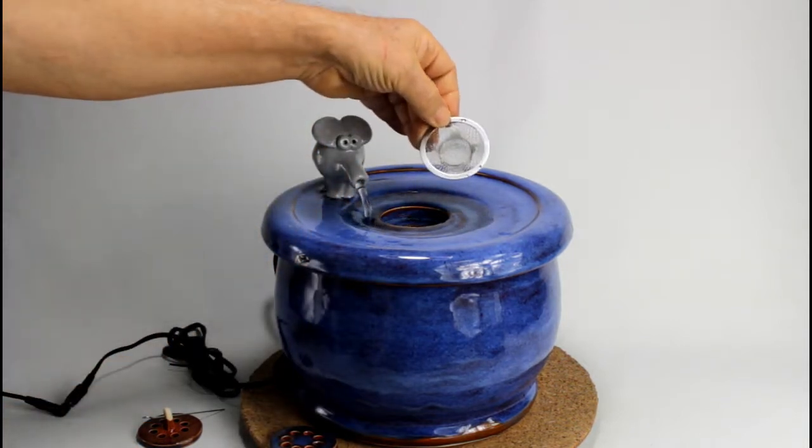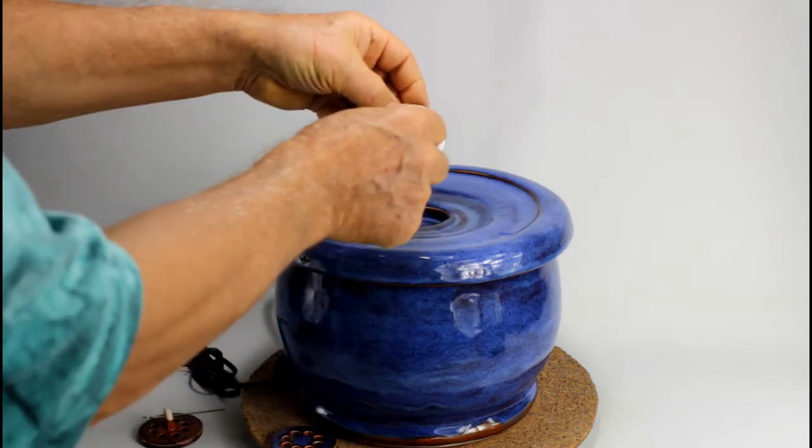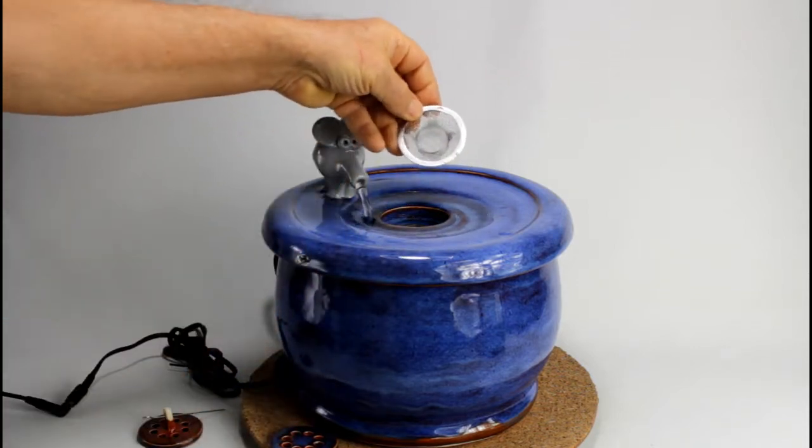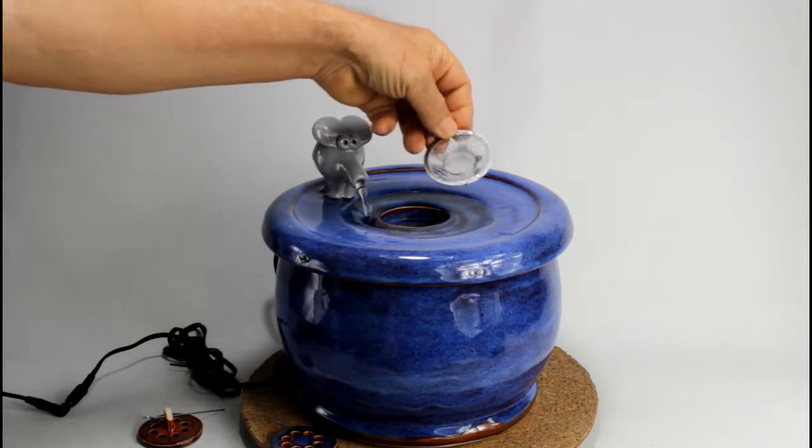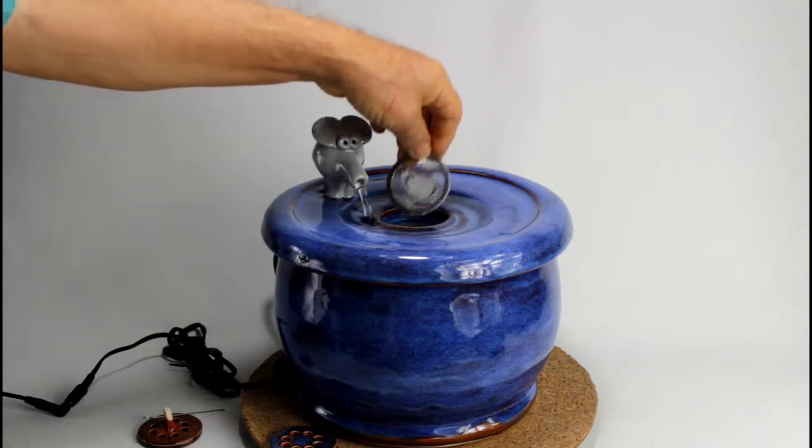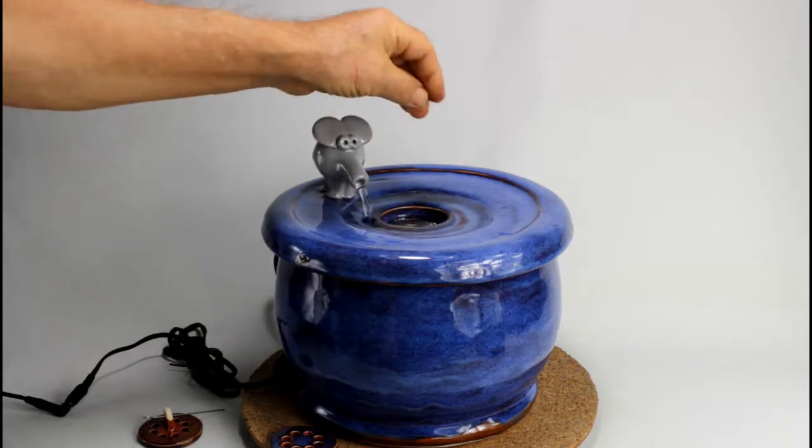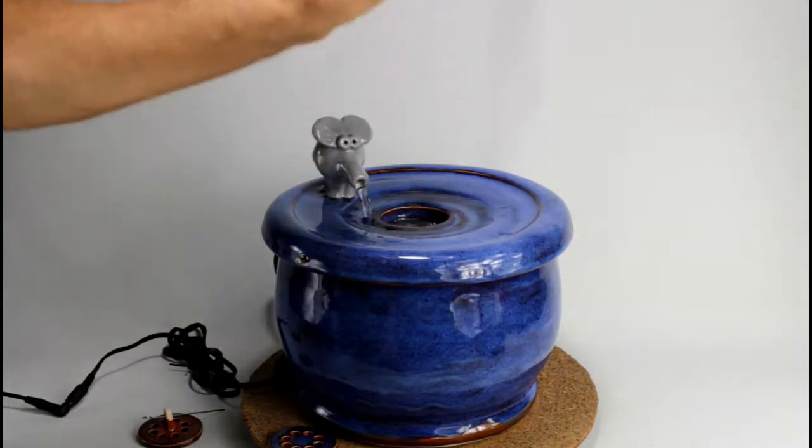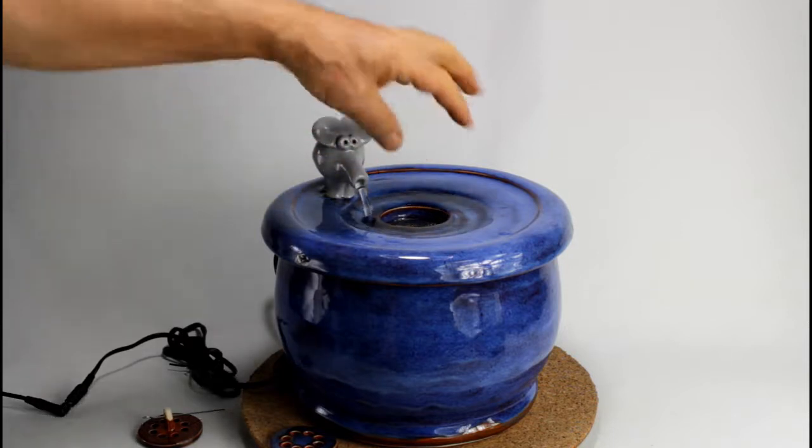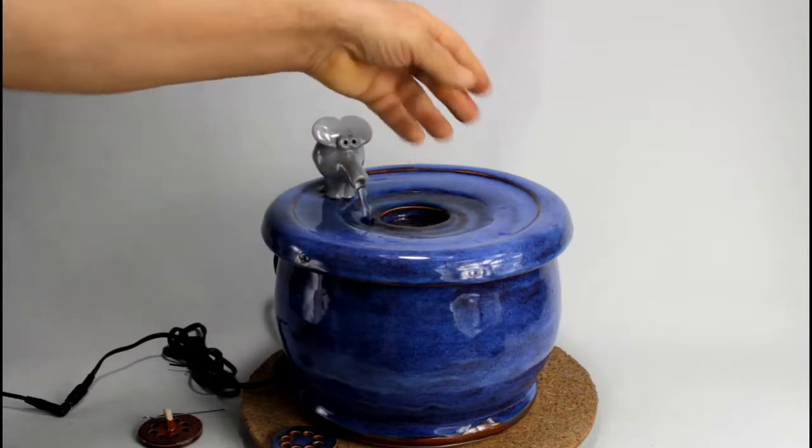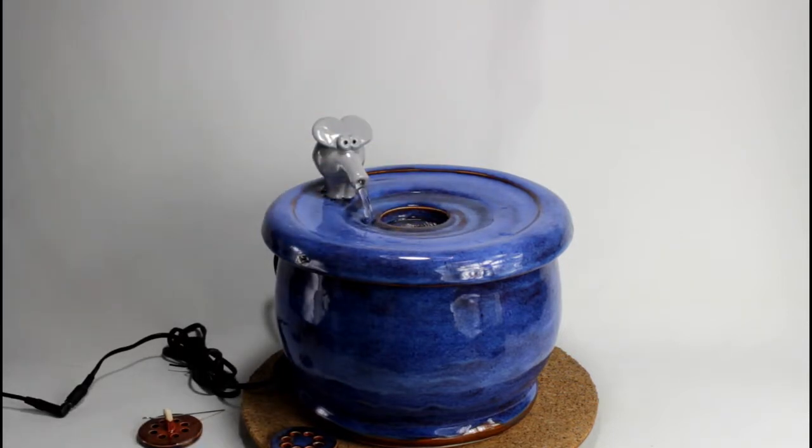With this sieve, you have two advantages. First is it filters the water, pre-filters the water. And the second, it smooths the flow so it doesn't fall back so hard. It falls back smoother and then it doesn't make a noise.